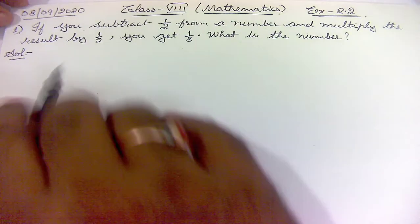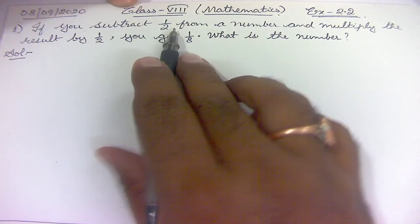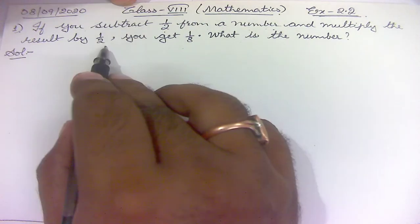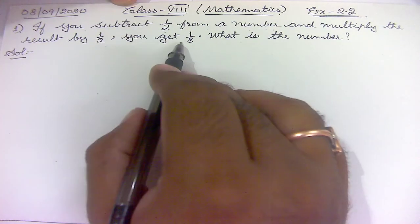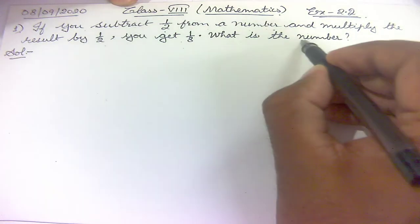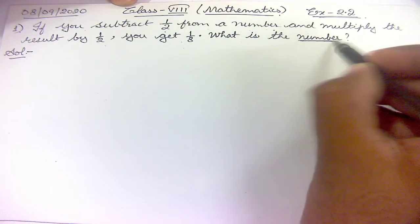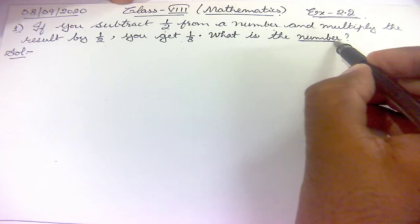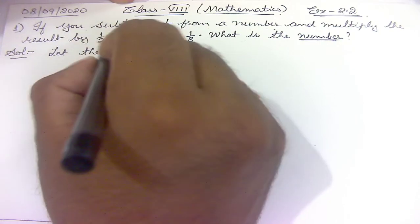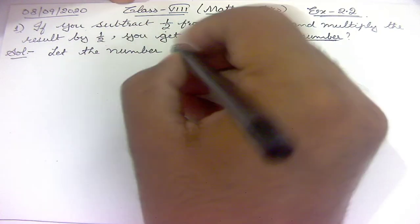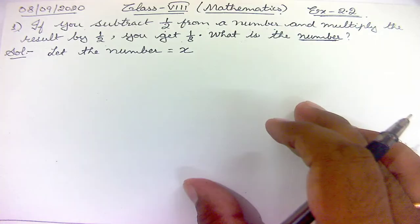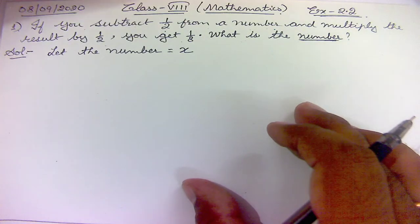The first question says: if you subtract 1/2 from a number and multiply the result by 1/2, you get 1/8. What is the number? Here we have to find the number, so this is unknown to us. We will take it as a variable — let the number equal x.